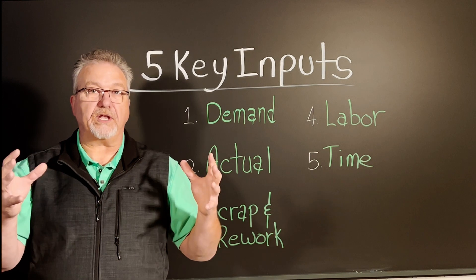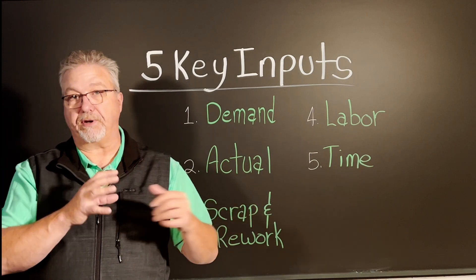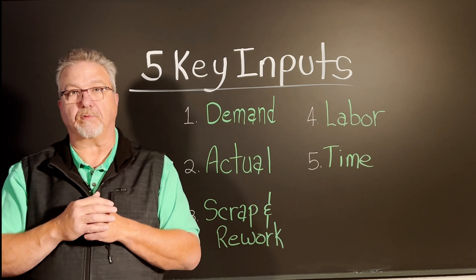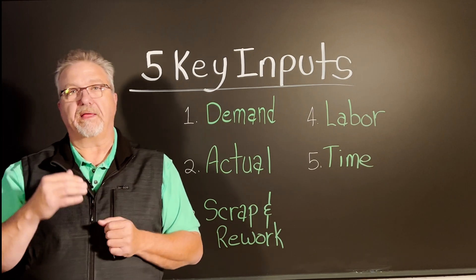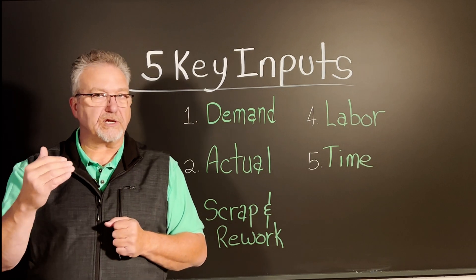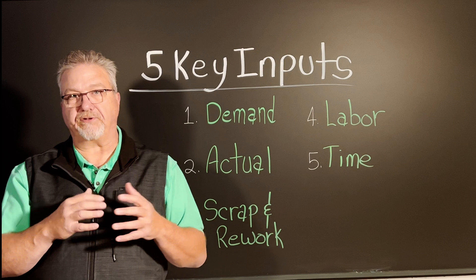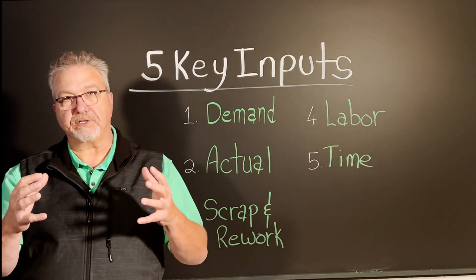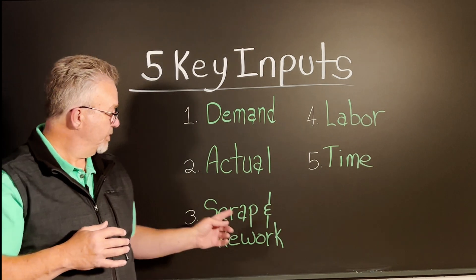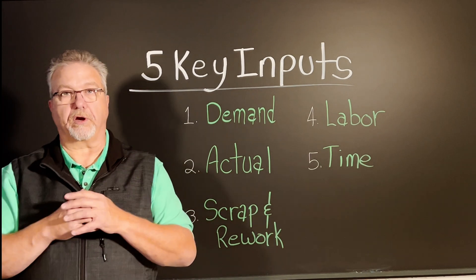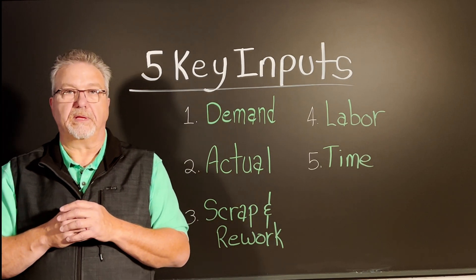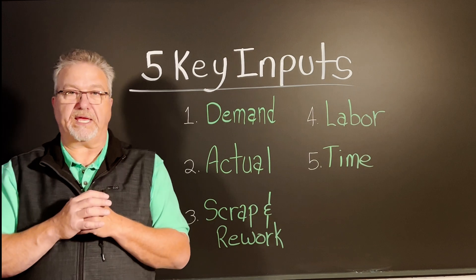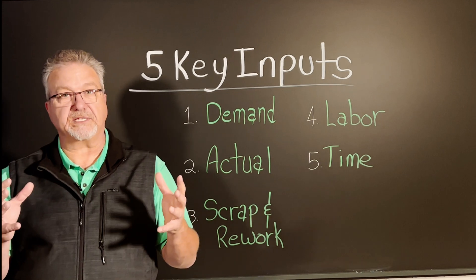Once a factory knows how many of a product needs to be produced, then understands how many of that product was actually produced, the next logical question for any production metric will be: how much of the product produced did we have to scrap or rework? This is usually a very difficult input to capture accurately in current MES systems.